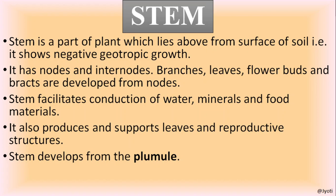The stem has nodes, internodes, branches, leaves, flowers, and flower buds. From the nodes, branches, leaves, flowers, and fruits are developed. I have already shown you what is node and what is internode in my previous session.